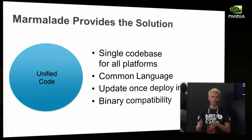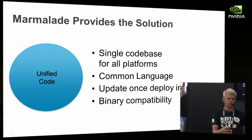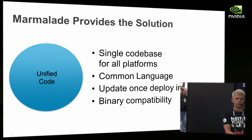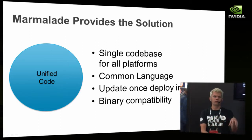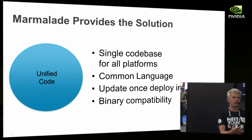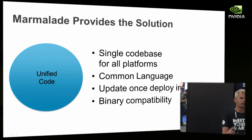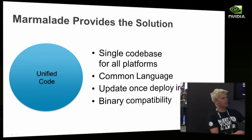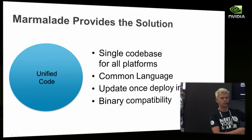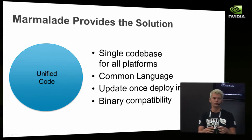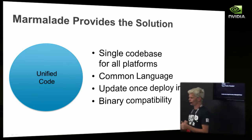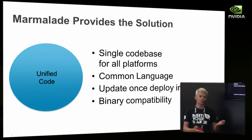We try and keep binary compatibility so that even if you've got an existing game build from last year's version of Marmalade, when a new version comes out with updates for new devices, you don't even need to rebuild your game — the same binary just runs on the new platform. I can take three-year-old content like that Need for Speed game and run it on platforms that didn't exist when the game was created, without the source code, without rebuilding.